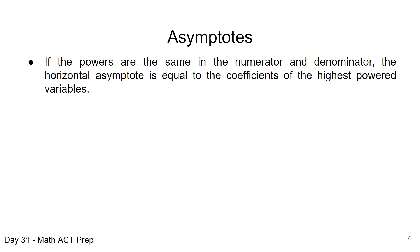There's another case for a horizontal asymptote: when the powers are the same in the numerator and denominator. In that case, the horizontal asymptote y equals is determined by the coefficients of those highest-powered variables. For example, with 2x squared minus 5 divided by 3x squared minus 1, the highest exponents — x squared — are the same in both numerator and denominator. So we look at the coefficients on those two terms: 2 over 3.